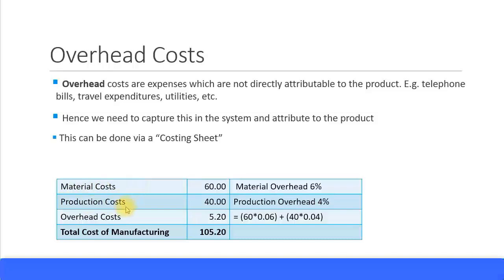Another type of cost is overhead costs. Overhead costs are expenses which are not directly attributable to a product — you cannot directly say that this cost is used for this particular material or attribute it to a particular set of labor activities. These are common costs for the whole production process. For example, telephone bills, travel expenditures, utilities like gas, heating, electricity, and water are all called overhead costs.